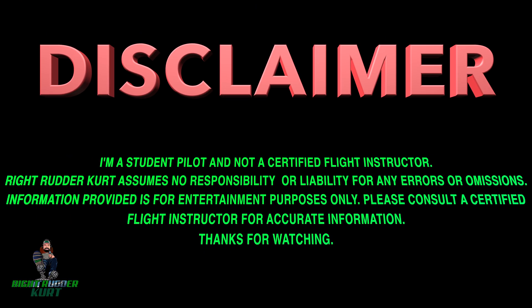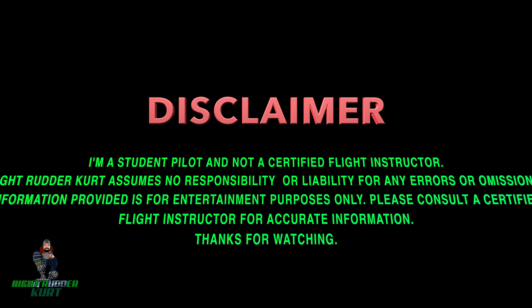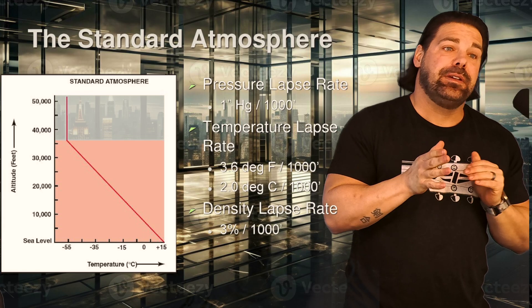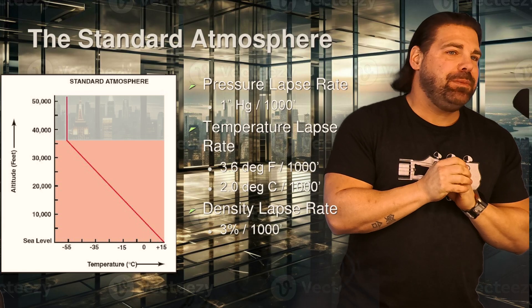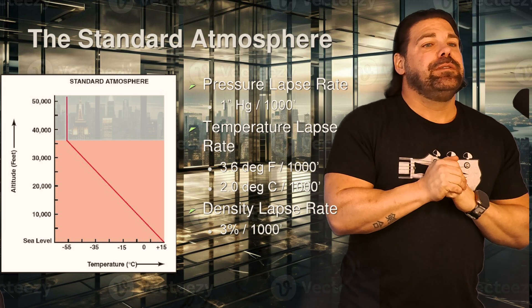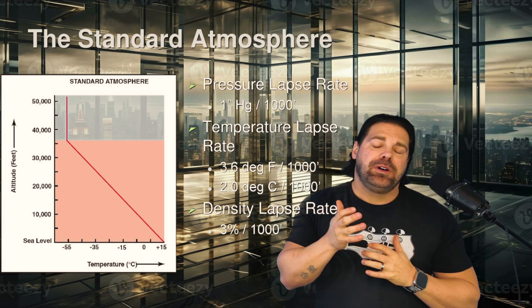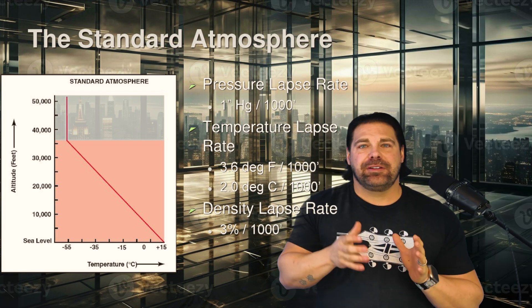Welcome back Aviation YouTubers. In the last video I had asked you how much does the temperature decrease for every thousand feet that you gain in altitude? Here's the answer: it is 1.98 degrees Celsius of a decrease for every thousand feet that you gain in altitude, also known as the standard lapse rate.